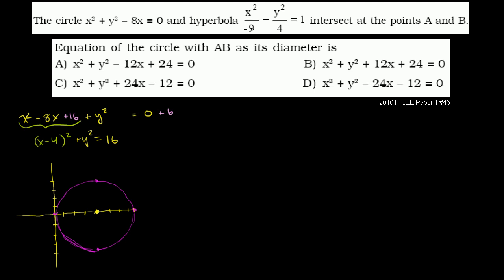Then they have a hyperbola: x squared over 9 minus y squared over 4 equals 1. This hyperbola is going to open to the left and the right since our x term is positive. It's going to look something like this.